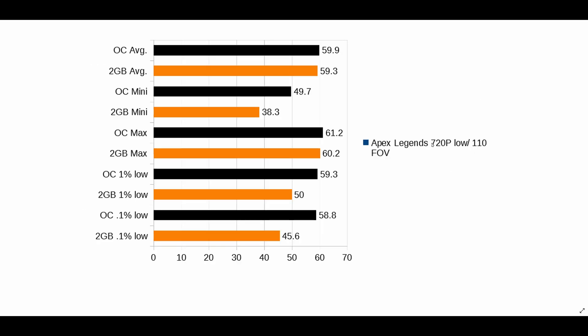Apex Legends was played at 720p low with field-of-view all the way out — which I figured is a competitive setting similar to Fortnite. The average is up slightly to 59.5 from 59.3, minimum went up to 49.7 from 38.3, max is up to 61.2 from 60.2, 1% low up to 59.3 from 50, and the 0.1% low is 58.8 up from 45.6. Those are the numbers I ended up with.